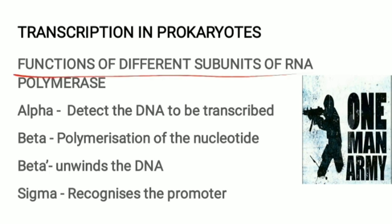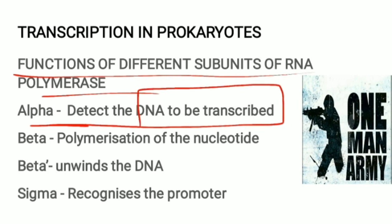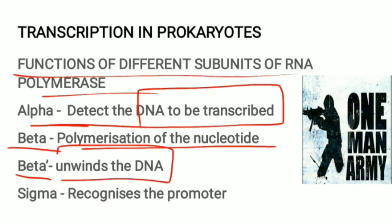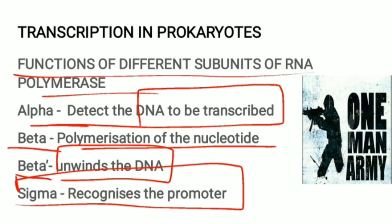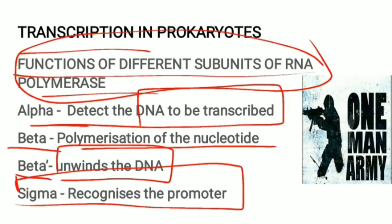The alpha subunit detects the DNA to be transcribed. Beta causes polymerization of nucleotides through 3' to 5' phosphodiester bond formation. Beta-prime unwinds the DNA, and sigma helps in recognition of the promoter. Unlike DNA replication — which requires separate enzymes like helicase and primase — in transcription a single enzyme, the DNA-dependent RNA polymerase, performs all functions, so it can be called a one-man army.